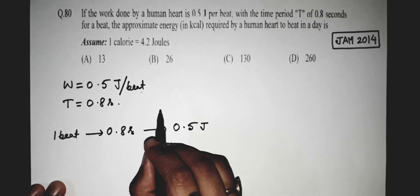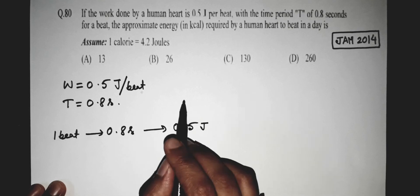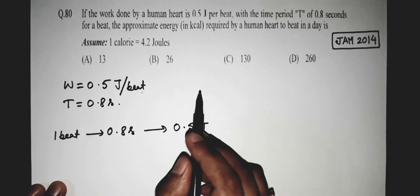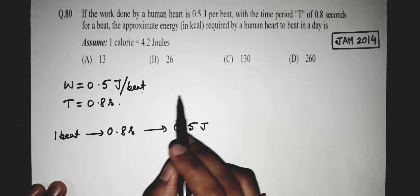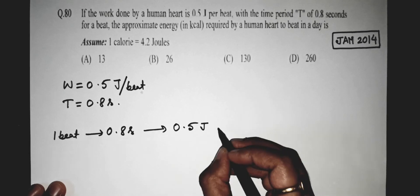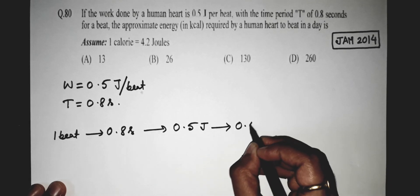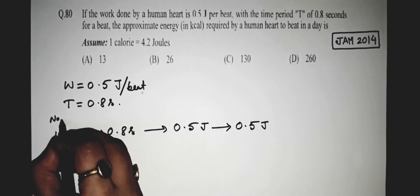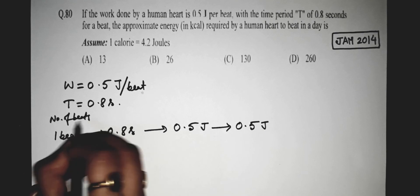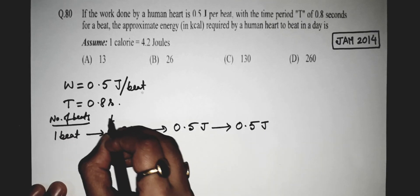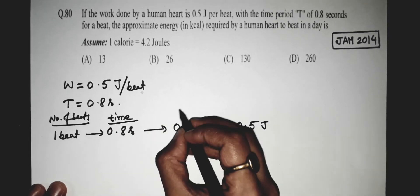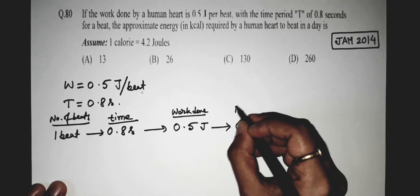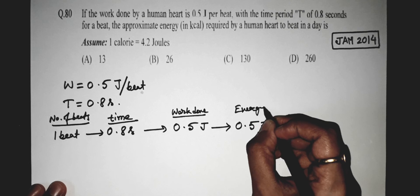Now, the amount of work done is simply equals to the amount of energy required. Why? Because the energy will be converted into work done. So the energy required is 0.5 joules. Now, this is the number of beats. This is amount of work done. And this is the energy required.